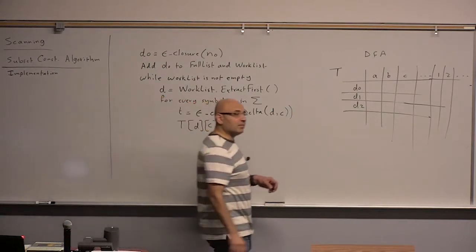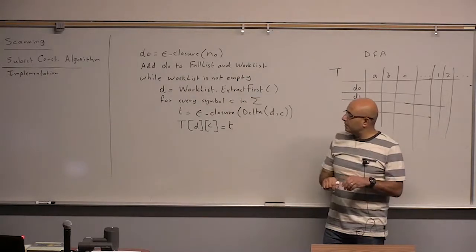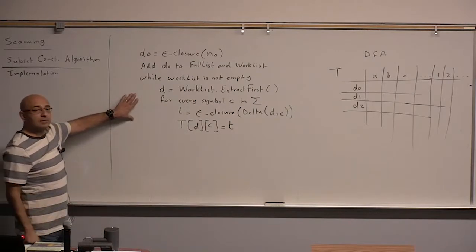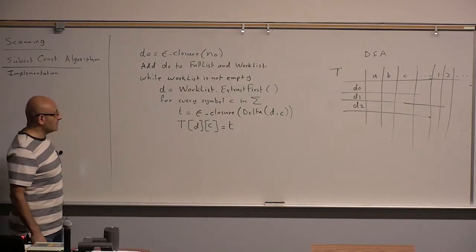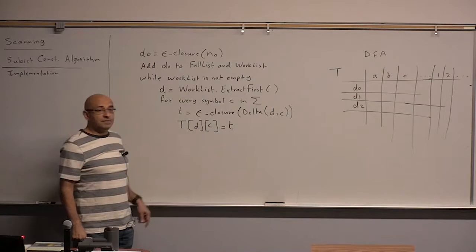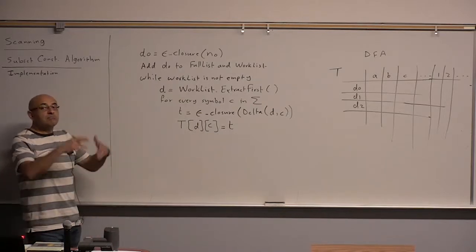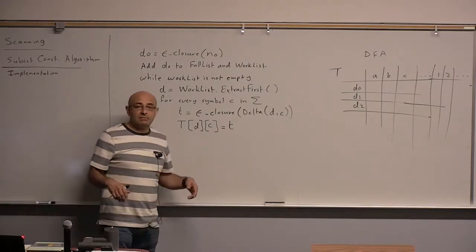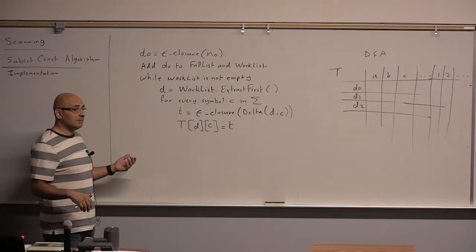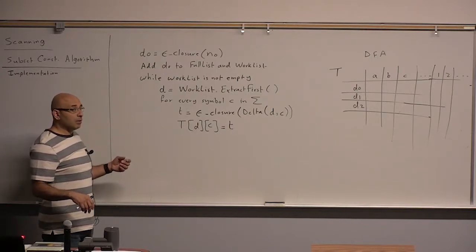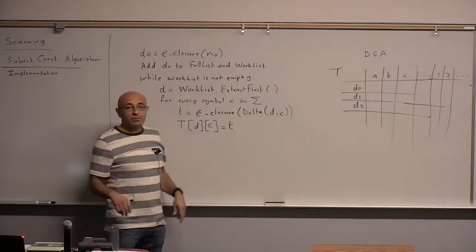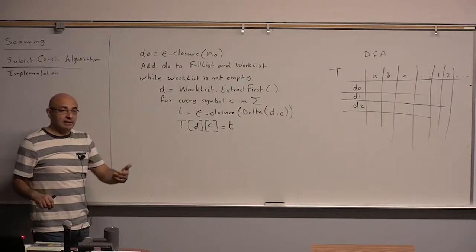Then what should we do? So we have discovered, we have processed this state. And then we found the transitions. And then what should we do? We have to check for duplicates. Okay, great. So that's a good point. So we have to check if T is new or has been seen before, right? If T is new, then what should we do with it? Added to the work list. Added to both lists. Because if it's new, then it will be added to the full list, and it will be added to the work list because we have to process it next.